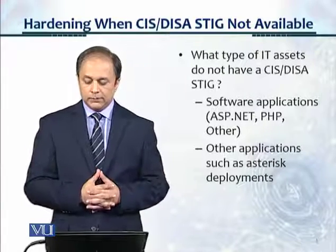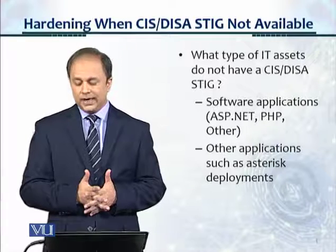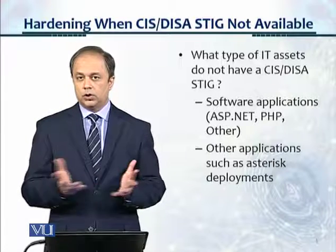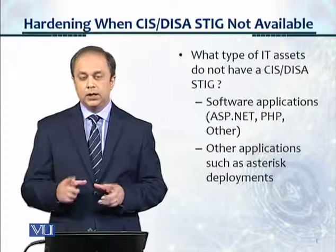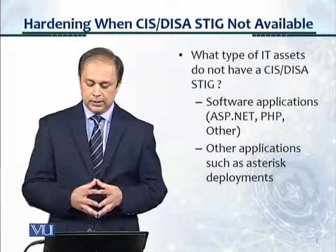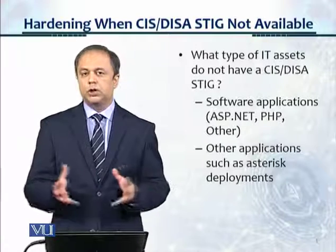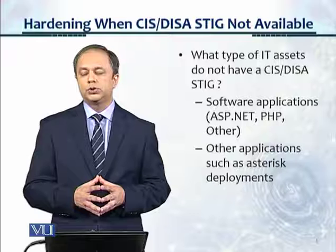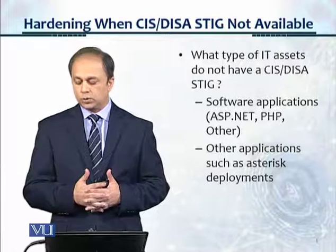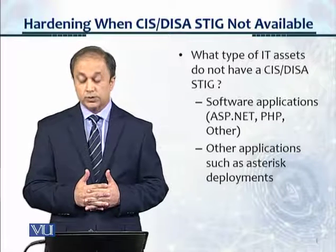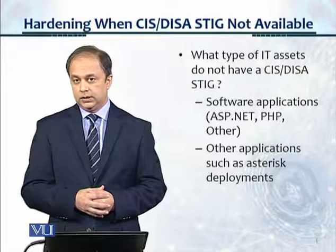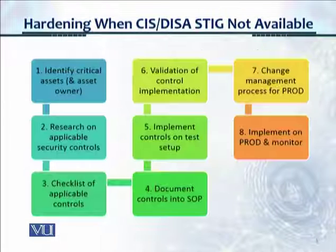What type of IT assets do not typically have a CIS or DISA STIG? Software applications are not there — like ASP.NET, PHP — but general software guidelines are available in DISA. Other applications that are not commonly used, due to security issues, or sometimes open source tools like Asterisk deployments, don't have a STIG or benchmark available.